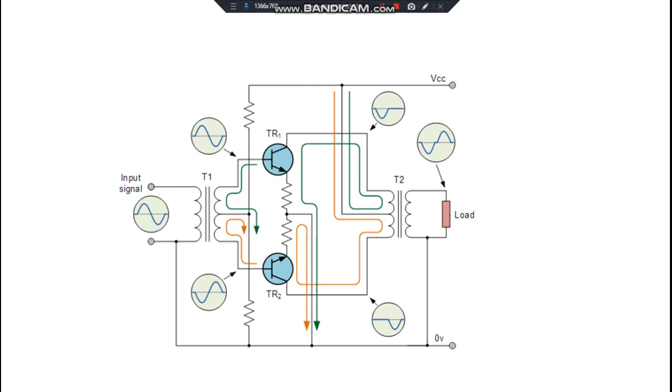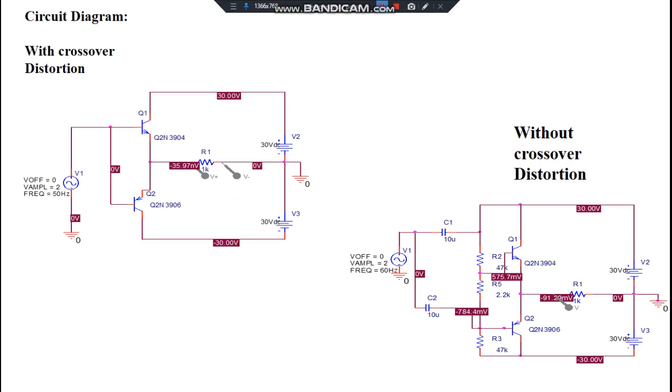This is a PSPICE simulation for Class B push-pull amplifier with crossover distortion, where you don't have anything. All you do is take the load across these points and plot it on the waveform.